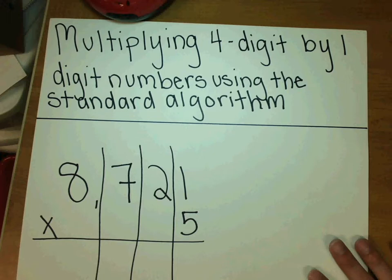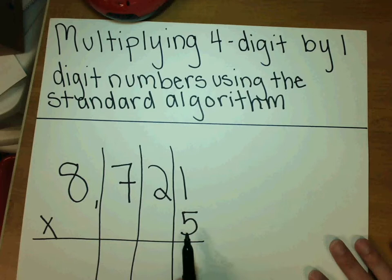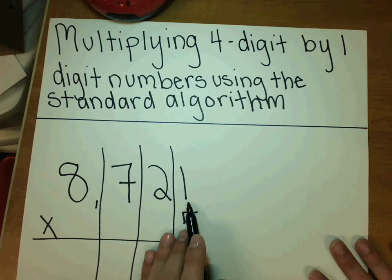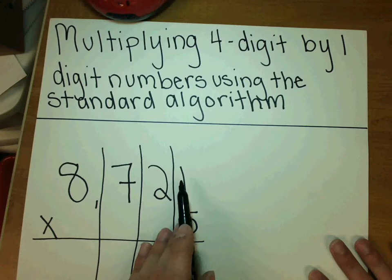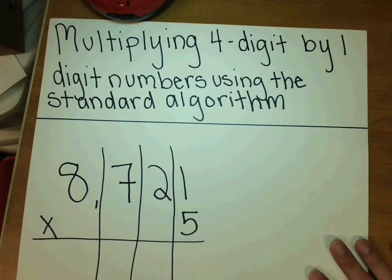When we multiply, we always start — like we do with addition — with the smallest place value. So when we're multiplying 8,721, we're going to start by multiplying five by all the digits in this number. We start with the ones place and go ascending: the tens, the hundreds, and then the thousands.